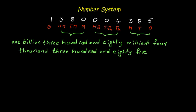Now we can check the face values and place values. Can you tell me what is the face value of this digit? Yes, the face value is 8. And the place value — 5 is in the ones place and 8 is in the tens place — so the place value of 8 is 8 into 10, that is 80.